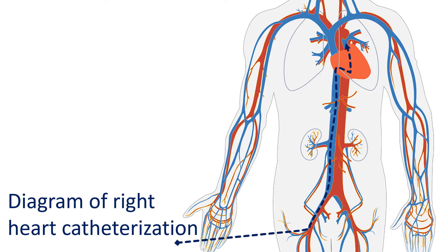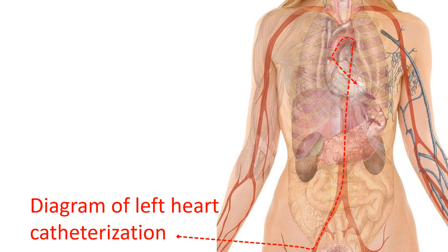Catheterization of the right side of the heart is called right heart catheterization. This is done by introducing catheters through the veins, the blood vessels carrying oxygen-poor blood to the heart. Catheterization of the left side is known as left heart catheterization, done by introducing catheters into the arteries, the blood vessels carrying oxygenated blood to various parts of the body. In most cases, both are done in the same sitting, often simultaneously.